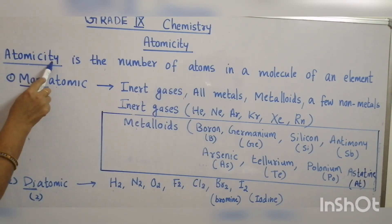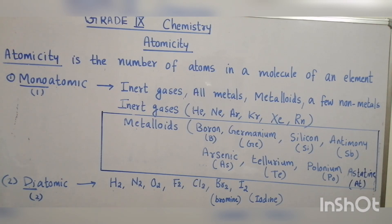Based on atomicity, elements are classified into monoatomic, diatomic, triatomic, tetraatomic, and polyatomic.